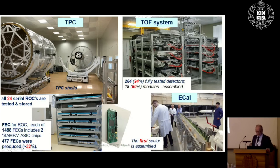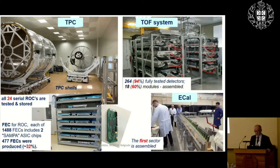Here are examples of production of detector elements: the time projection chamber, time-of-flight system, and electromagnetic calorimeter. The production stage is close to completion; we expect the assembly will be completed next year and we will start beam interactions and record first events. Several MPD physics groups are already organized and working around the world, preparing simulations and analyses.